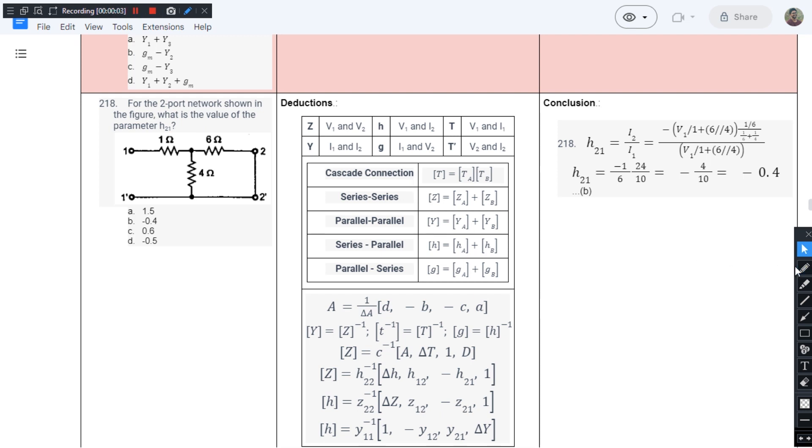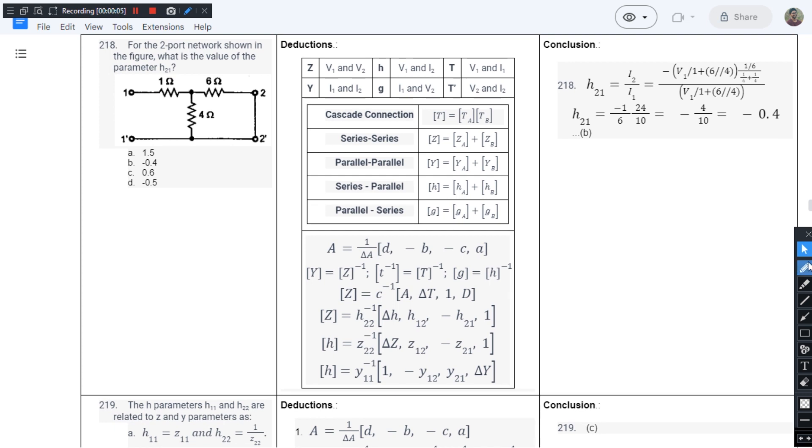This is question number 218 from chapter 1 of JB Gupta's book. For the two-port network shown in the figure, what is the value of H12 parameter? So we have been given a circuit and we are being asked to find the value of H12 parameter.